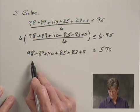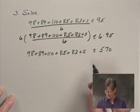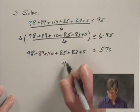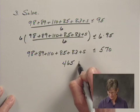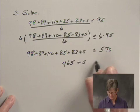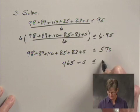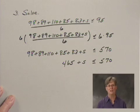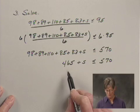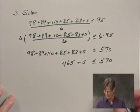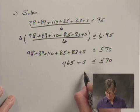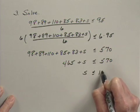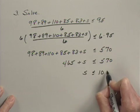When I add these five numbers together on the left-hand side, I get 465. So I have 465 plus S is less than or equal to 570. Finally, I subtract 465 from both sides, and I get S is less than or equal to 105.